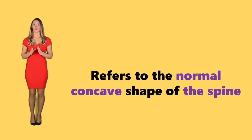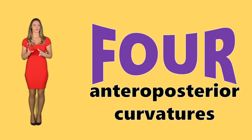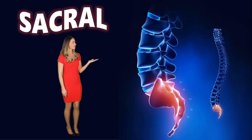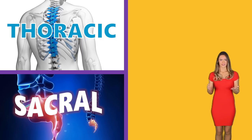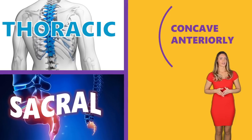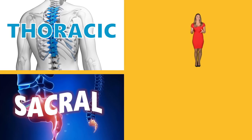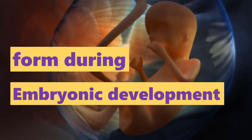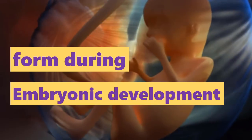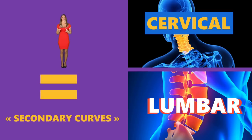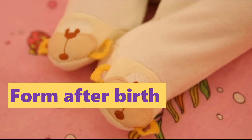Curvature refers to a normal concave shape of the spine. There are four anterior-posterior curvatures observed in the vertebral column: the thoracic, the sacral, the cervical, and the lumbar. Both the thoracic and sacral curvatures concave anteriorly, while the cervical and lumbar concave posteriorly. The thoracic and sacral curvatures are called the primary curves, which form during embryonic development. The cervical and lumbar curvatures are called secondary curves, because unlike primary curves that develop during fetal development, the secondary curves form after birth.